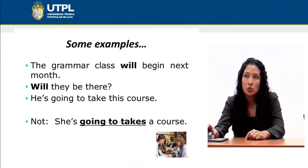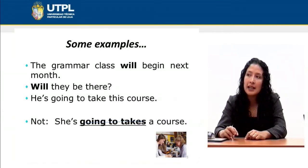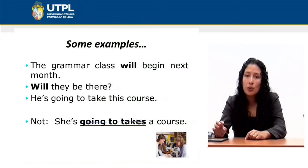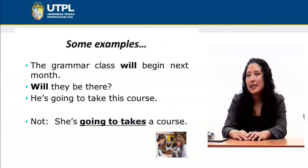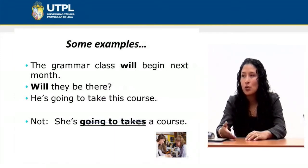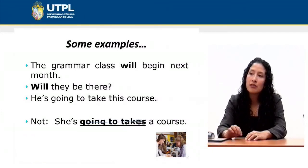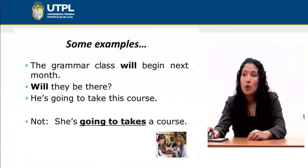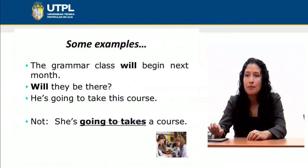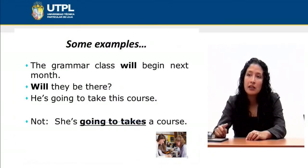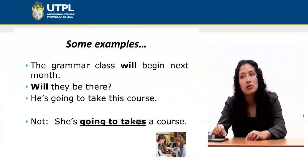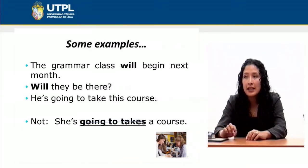Here I have included examples of 'will' and we are going to compare them with 'going to.' 'The grammar class will begin next month,' or I can also say 'the grammar class is going to start next month.' These are very similar but have a little bit of difference. With practice you will learn how to choose the correct future tense. For example: 'Will they be there?' or 'He's going to take this course' — I can also say 'He will take this course.'